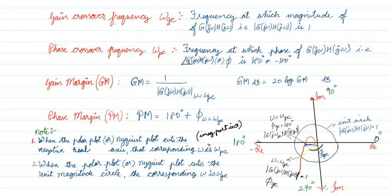Now let us look at a simple polar graph — a quick refreshment. This is a polar plot. The concentric circles indicate the magnitude. This is the unit circle, where the magnitude is 1. I have marked the unit circle where the magnitude is 1.